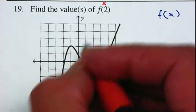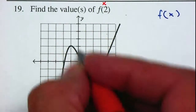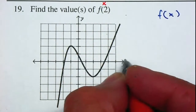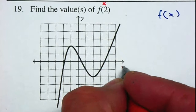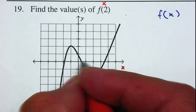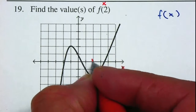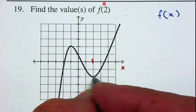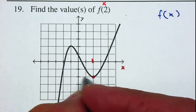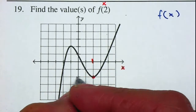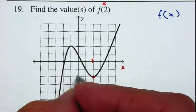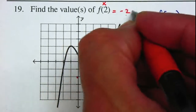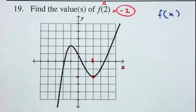They don't give you an equation but they do give you a graph, so therefore for the x value, if you plug in a 2, what do you get for the y? What is the value that you get? You get negative 2, and that'll be the answer.